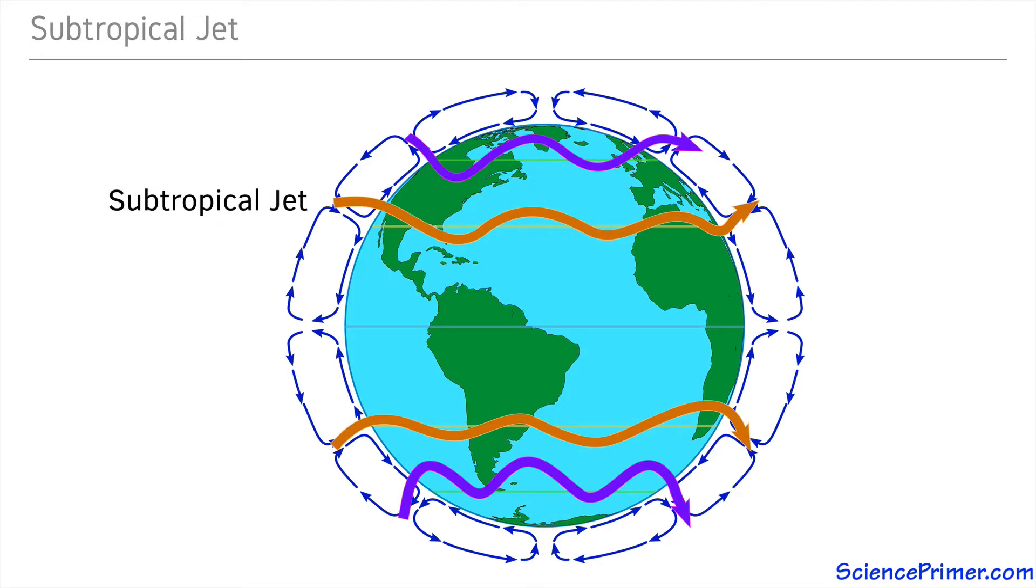They are not as strong or as concentrated as the polar jets because the jets derive their strength from the temperature difference between the masses of air in each convection cell, and this temperature difference is less pronounced closer to the equator. The fact that the Coriolis effect is less strong closer to the equator also contributes to the difference in strength between the polar and subtropical jets.